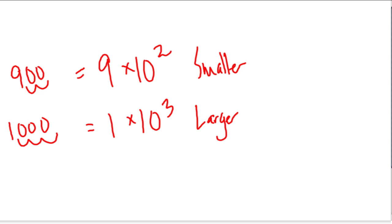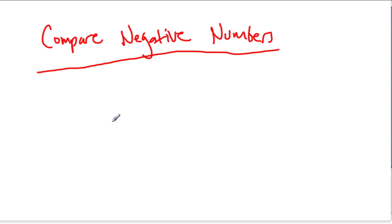So, this algorithm also kind of works for negative numbers. So let's compare negative numbers. Only, I said kind of because we have to kind of use reverse logic in a way. So, number 1, compare the exponents. And then, number 2, compare coefficients.